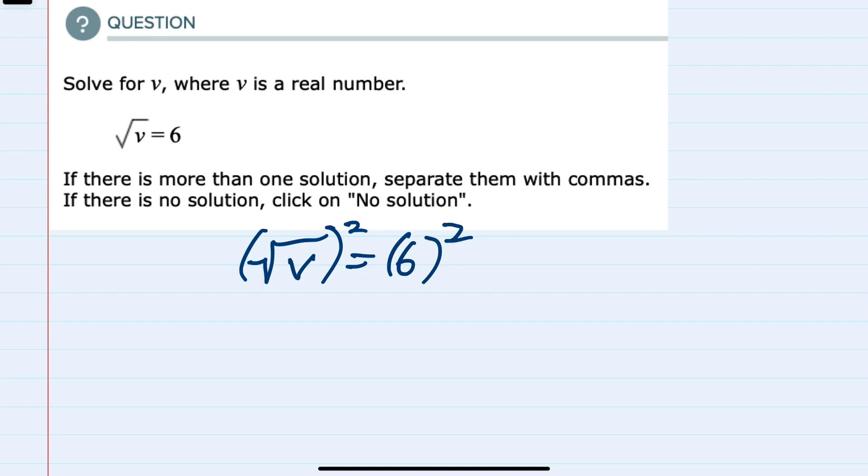on the left-hand side, the square root being squared cancels out, leaving me with just the v. And then on the right-hand side, 6 squared is 36.